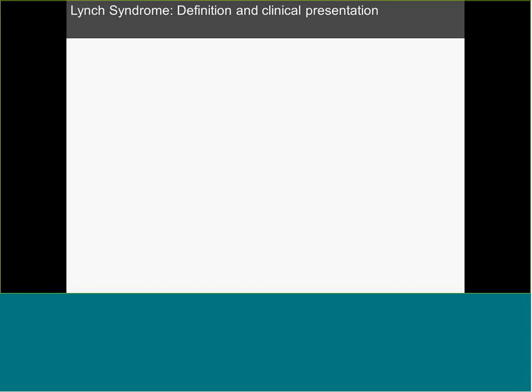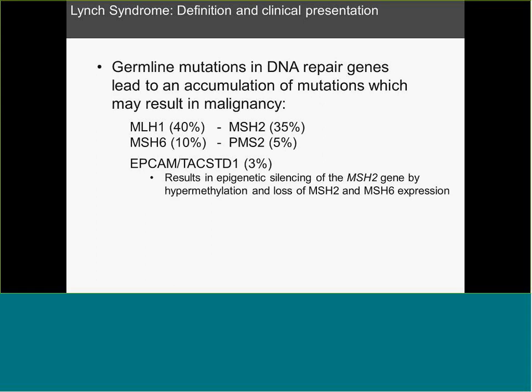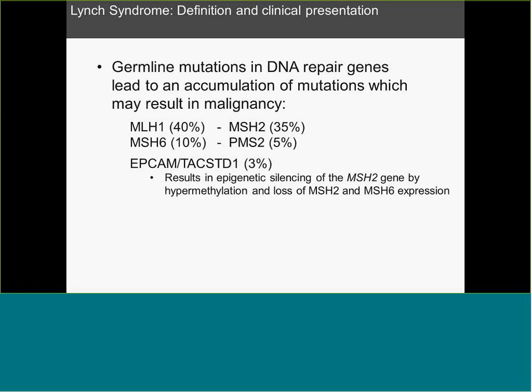Lynch syndrome is a germline mutation in DNA mismatch repair genes leading to an accumulation of mutations which may result in malignancy. The most commonly affected genes are MLH1, MSH2, MSH6, and PMS2. EPCAM may also, in a very small subset, be the driving mutation — the EPCAM mutation results in epigenetic silencing of the MSH2 gene by hypermethylation. So if you have loss of MSH2 and MSH6, EPCAM may be involved. Lynch syndrome is genetically heterogeneous, can affect different MMR genes, and has a high penetrance.